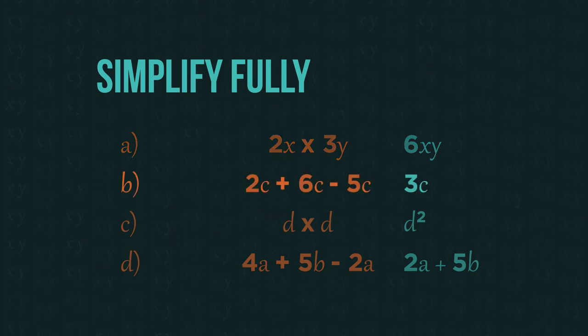In the second one, we group the same letters together, so 2 plus 6 minus 5 gives us 3c.